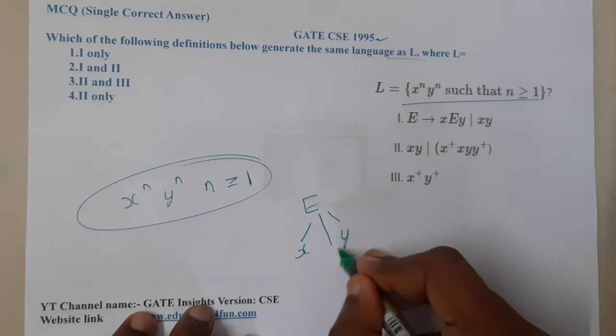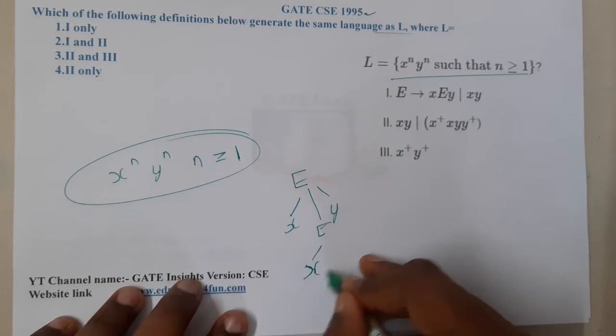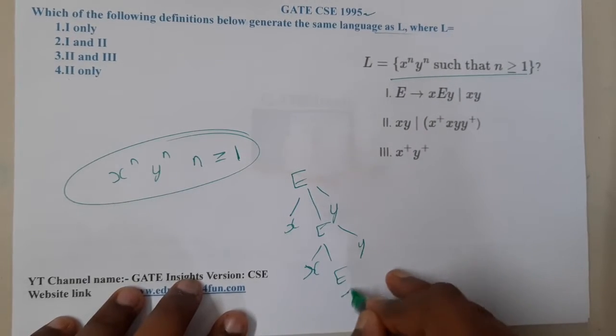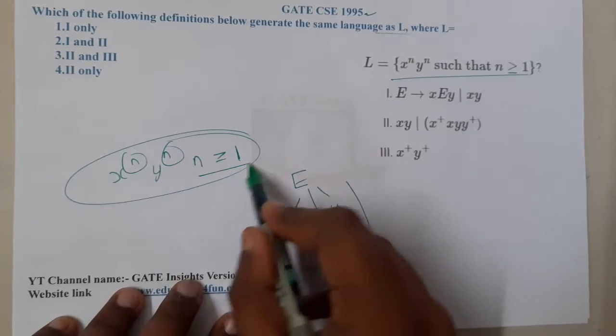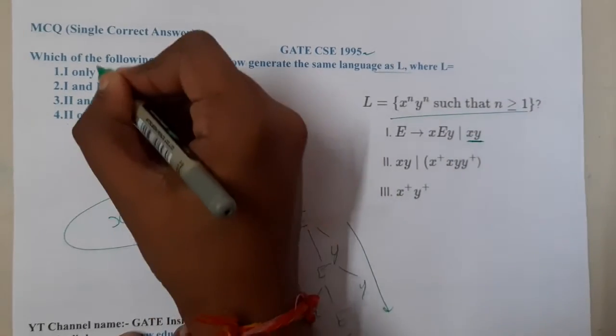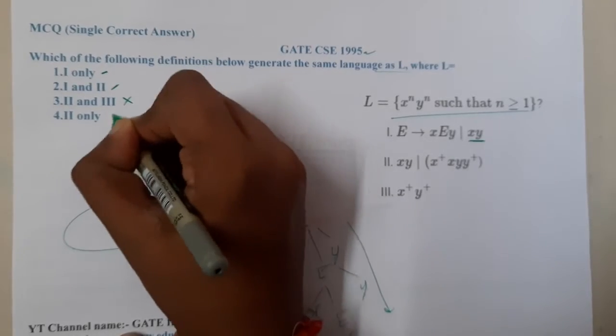So indirectly, any times you do you are going to get this, and the minimum length here also is one. So I think hundred percent option one will be there in the answer, so option three and four are wrong.